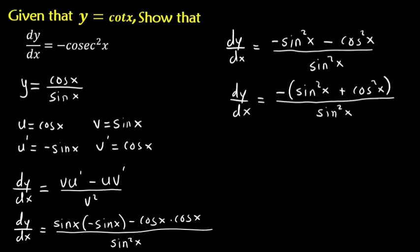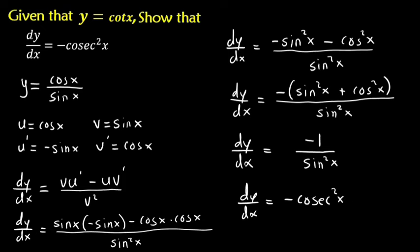Now that bracket that we have, sine squared plus cos squared, that's just one. So dy dx is negative one, all this is over sine squared. So one over sine produces a cosec, while one over cos produces a sec. So in this case we have one over sine. Hence dy dx is negative cosec square x. And that's how you show that the derivative of cot is negative cosec. I hope it makes sense.